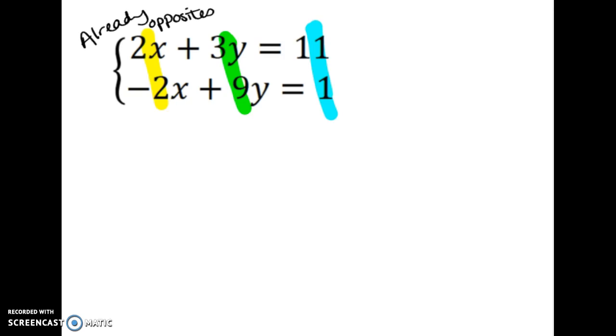When you're going straight to step 3, you're going to add straight down the column. So 2x plus negative 2x, that's 0. It's gone. I'm not going to write it. 3y plus 9y is 12y. And 11 plus 1 is 12. What's beautiful about this is we've added the same thing to both sides, because I said these things are equivalent. So we've done mathematically accurate things. And now we have this beautiful simple equation, 12y equals 12, and it only has one variable. So I'm going to get y alone by dividing both sides by 12, and I get y equals 1.